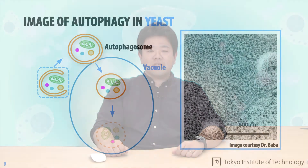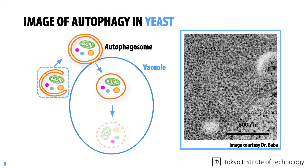Next, we'll have a look at what autophagy actually looks like in cells using electron microscope images. In this image we can see autophagy in a cross-section of a cell. Here you can see a growing cup-shaped membrane corresponding to this stage of autophagosome formation.